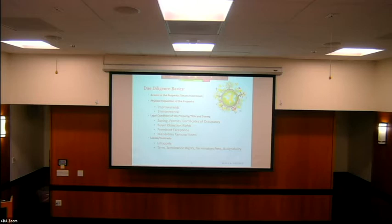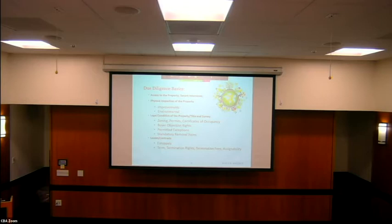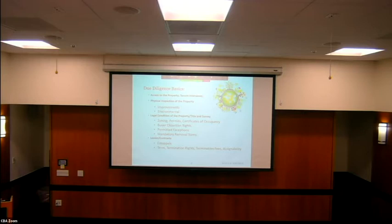Mandatory removal items are liens on your property or someone's rights to purchase your property — those must absolutely be removed. You do not want to buy a property with a lien on it. You do not want to buy a property where somebody has a right to purchase it at a sub-market price. If there's a lien, the lender could foreclose on it and you'd lose the property. These are things you ask a seller to remove — usually items that get cleared just by being paid off.